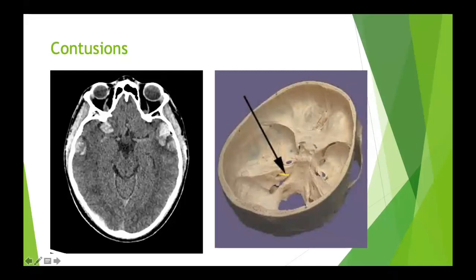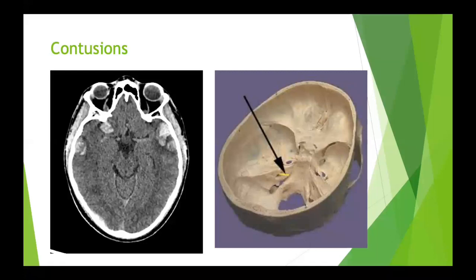Pathophysiology of contusions: with high-velocity acceleration-deceleration injuries, the anterior cranial fossa where the frontal lobes lie and the middle cranial fossa where the temporal lobes sit have very rough surfaces. If you imagine the brain shifting backwards and forwards on these rough surfaces, you can understand why contusions are mainly in the temporal and frontal lobes. You can see contusions in parietal and occipital lobes too, but with high-velocity injuries they're predominantly temporal and frontal.